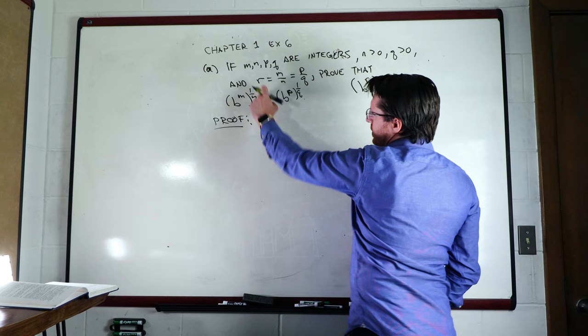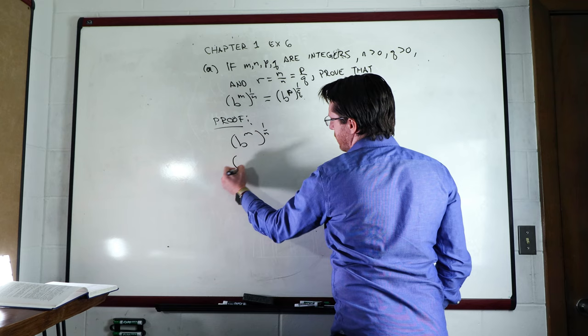So we start off with this quantity here, B to the M raised to one over N, and we're also gonna have this quantity here, B to the P raised to one over Q.